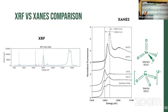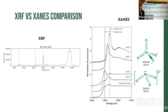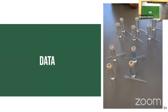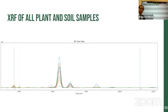The XRF graph shows the relative abundance of each element in the samples as photon count versus energy. The XANES graph shows what speciation of selenium is present based on where the peak is and what shape it takes — selenate and selenite are shown on this graph. This graph shows the XRF results for all our plant and soil samples. Plant samples included algae, moss, and periphyton; soil samples included sediment collected in the water and soil collected on the shore.